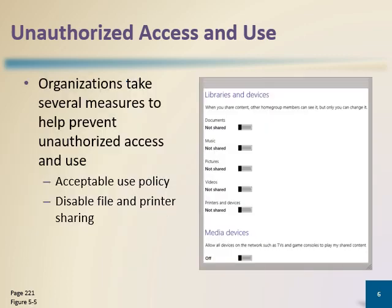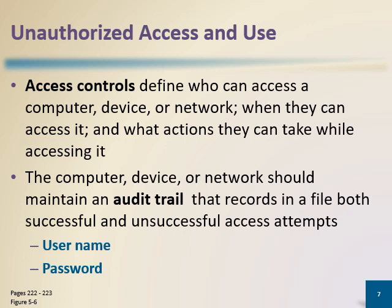Organizations can take several measures to help prevent unauthorized access and usage: by defining an Acceptable Use Policy (AUP), and by disabling file and printer sharing so that no one can use a printer or share files. They can also define access control mechanisms to minimize the chance that unauthorized users access a computer, device, or network.